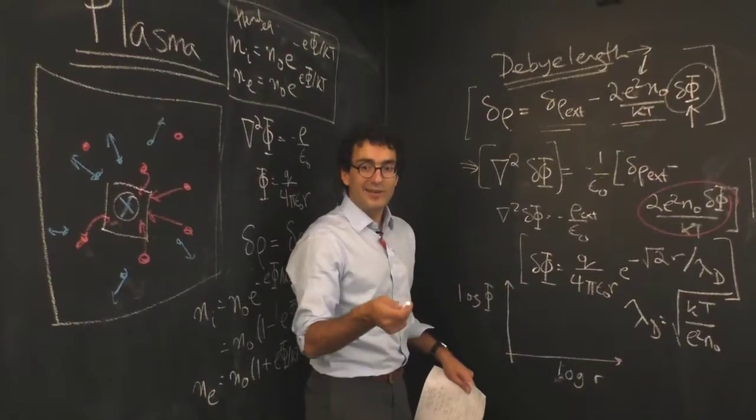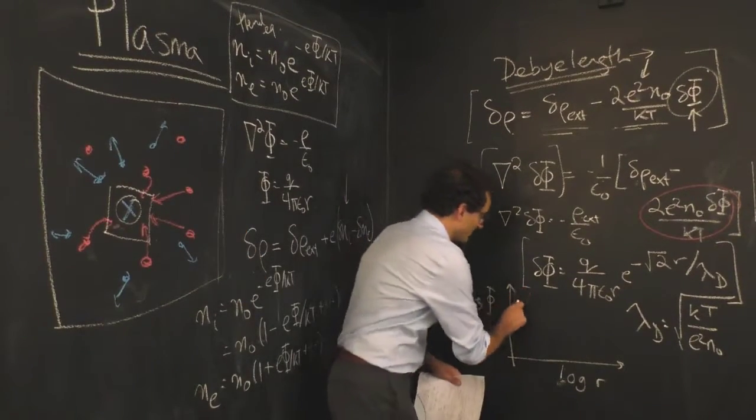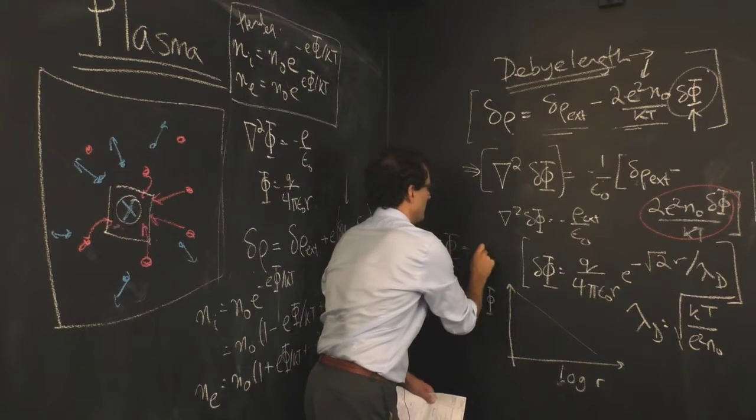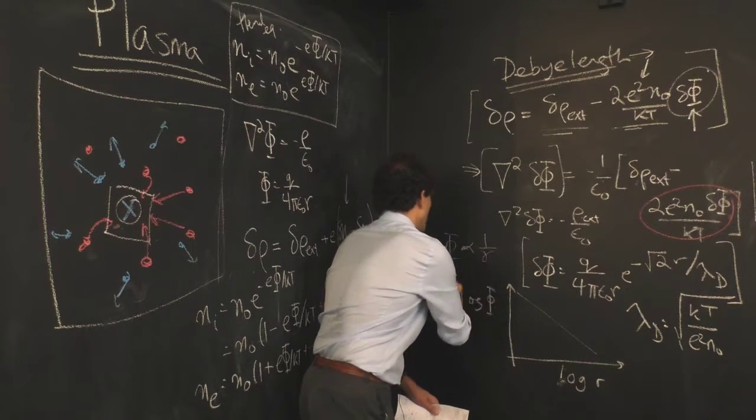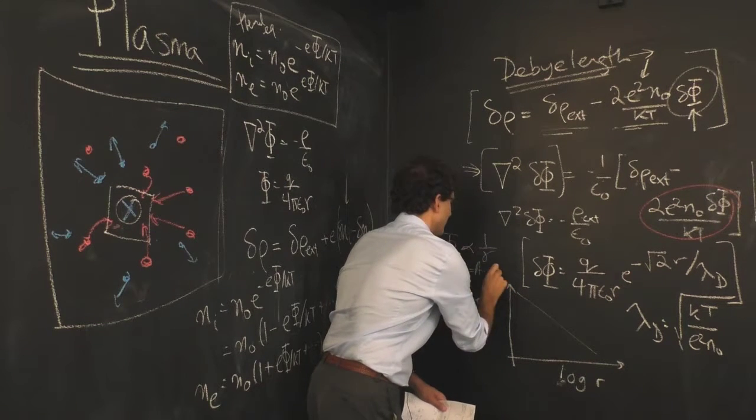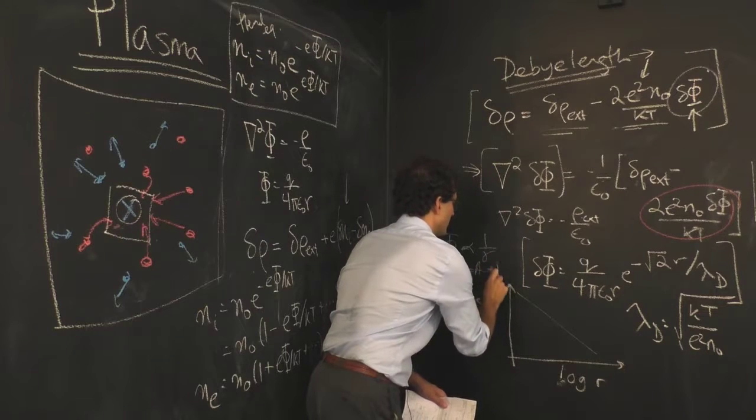In standard electrodynamics, if this plasma was not present, this would just be a straight line on a log log plot, because phi would be proportional to 1 over r. That means log phi equals a constant minus log r.